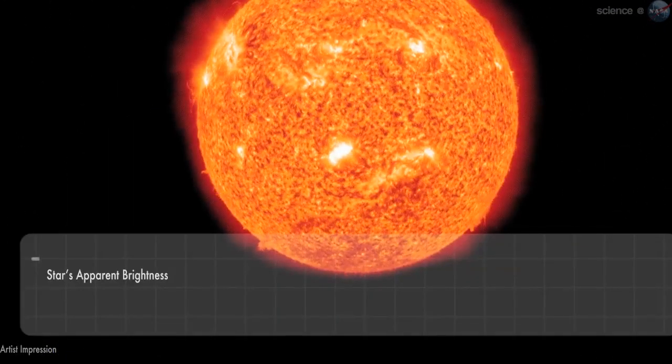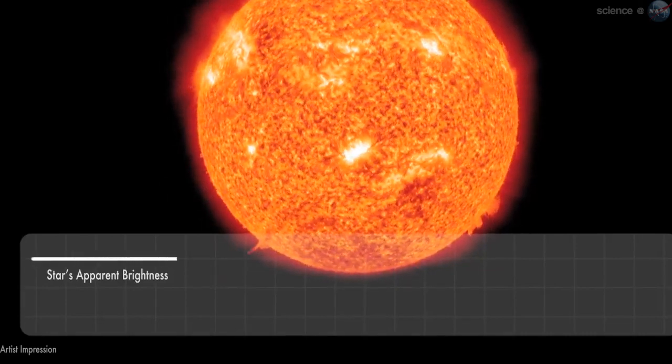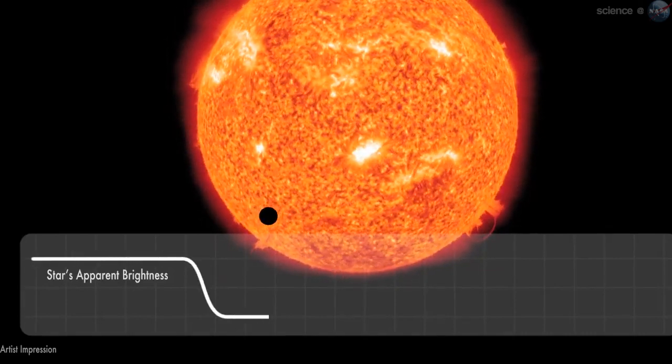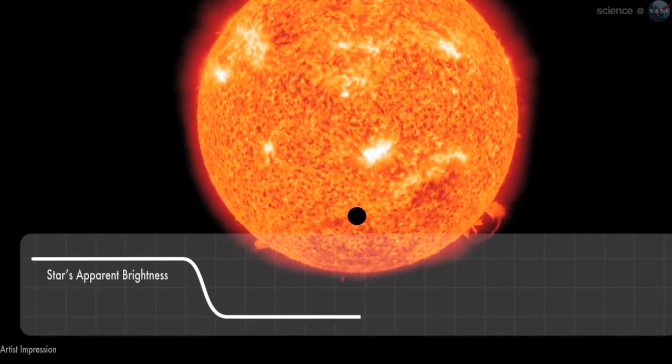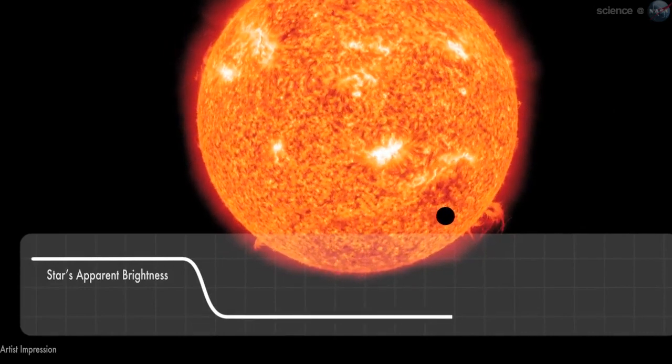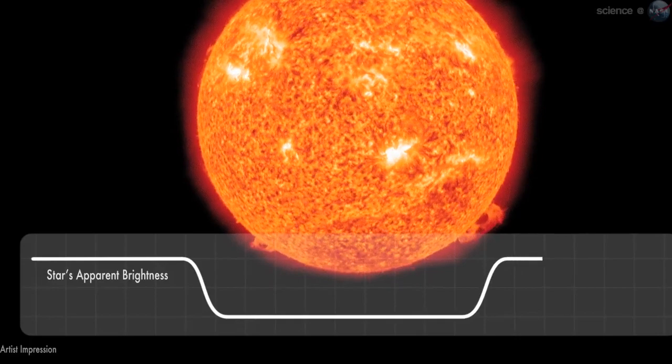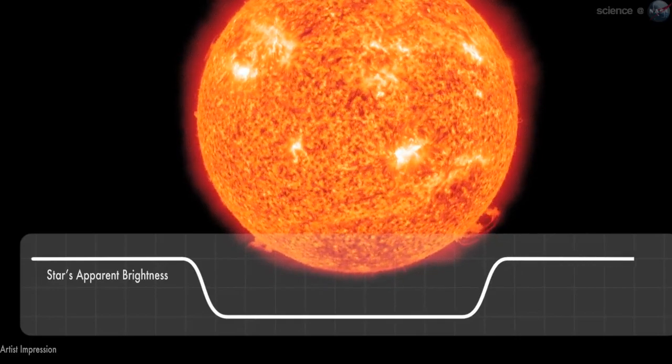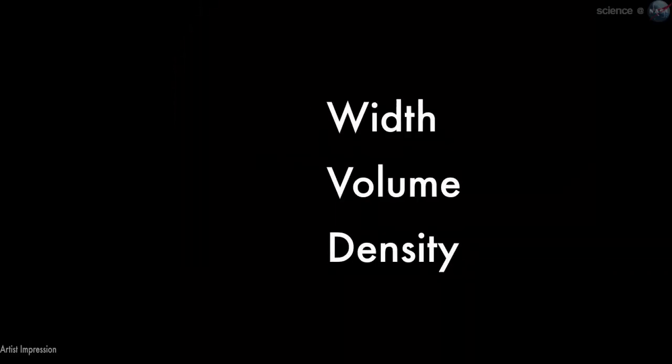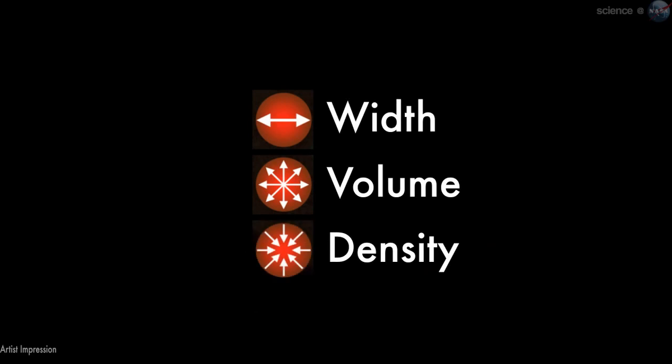Spitzer recently measured the extraordinarily small amount of light 55 Cancri e blocks when it crosses in front of its star. These transits occur every 18 hours, giving researchers repeated opportunities to gather the data they need to estimate the width, volume, and density of the planet.